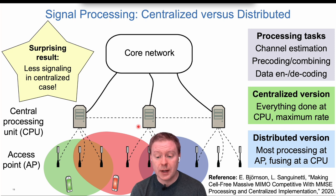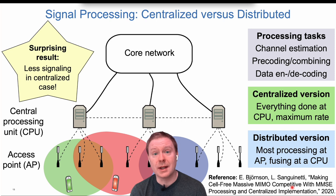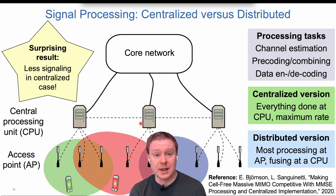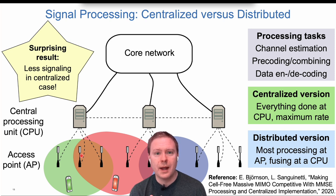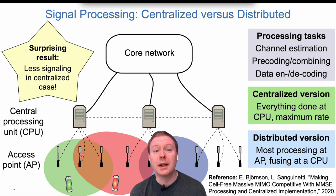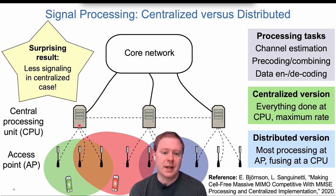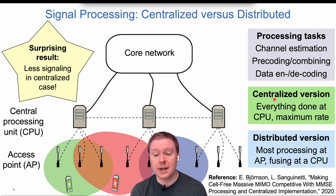A distributed approach lets access points do as much processing as possible, with CPUs handling only encoding and decoding. In the early cell-free massive MIMO era starting around 2015, people believed the distributed version was optimal — using processing capability at the access point while reducing signaling to the CPU. But we showed in a paper called 'Making Cell-Free Massive MIMO Competitive with MMSE Processing and Centralized Implementation' — which received the IEEE Marconi Prize Paper Award — that centralized processing actually requires less signaling. If an access point has one antenna but serves two users, pre-processing splits one-dimensional data into two-dimensional data, doubling the fronthaul load.